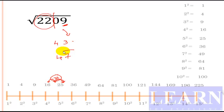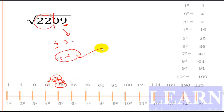If the first part is closer to 25 (the next perfect square), we take the larger number. If it is closer to 16, we take the smaller number. Here it is very close to 25, so the answer is 47 — no need to calculate 45 squared. If the number is closer to the next square, write the larger digit.